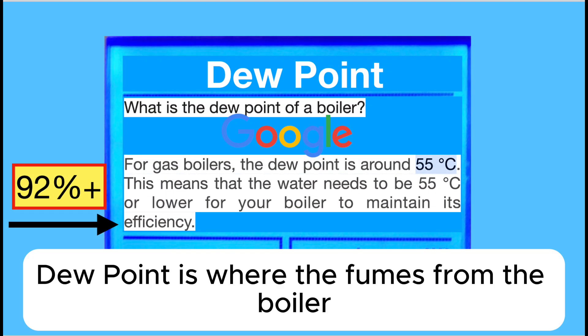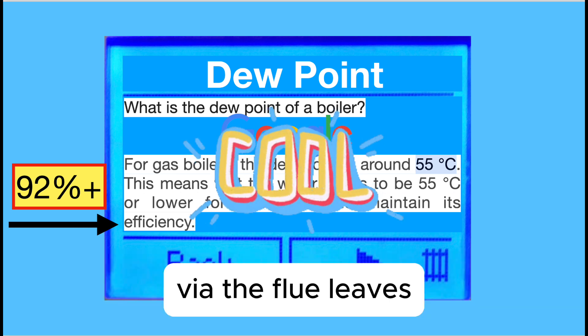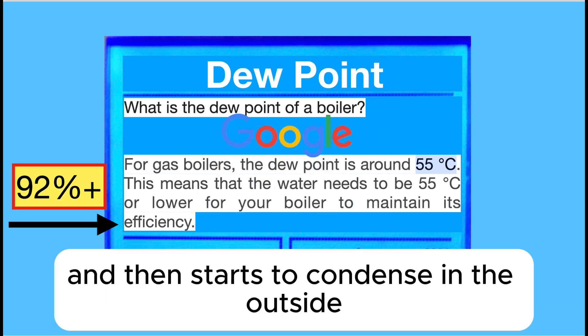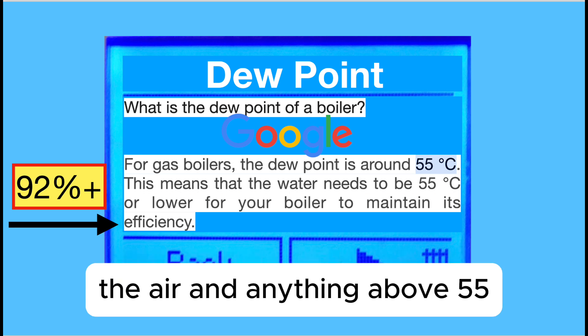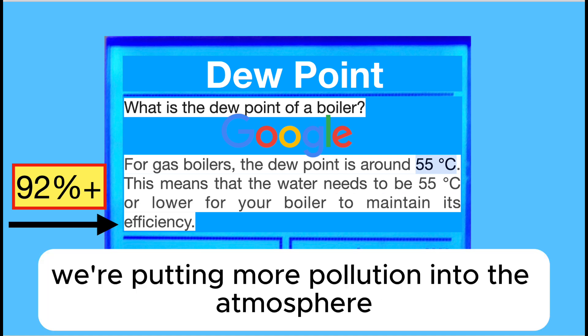The dew point is where the fumes from the boiler via the flue leave and then start to condense in the outside air. Anything above 55 degrees means that the boiler is inefficient, and we're also putting more pollution into the atmosphere.